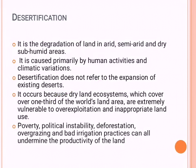Now, desertification is the degradation of land in arid, semi-arid, and dry areas due to human activities or climate variations — resulting in loss of vegetation, disappearance of animals, no water, and decreased precipitation. Importantly, if a hot desert is expanding toward Madhya Pradesh, that is not desertification — desertification means degradation within the present area. It occurs where one-third of the world's land is covered by dry land. Causes include over-exploitation, poverty, political instability, deforestation, over-grazing, and bad irrigation practices.